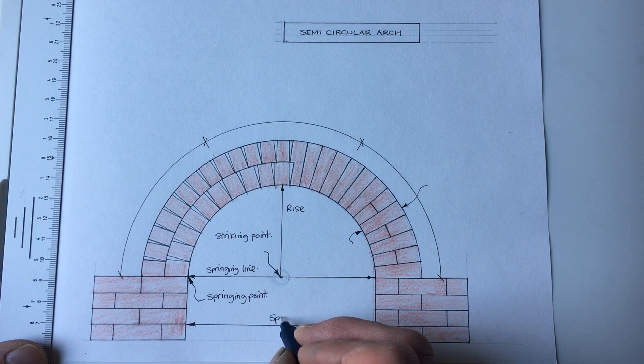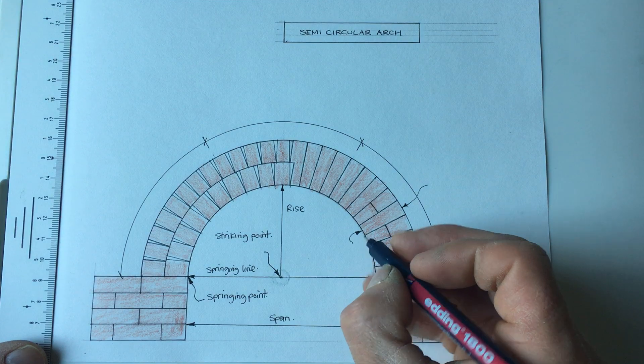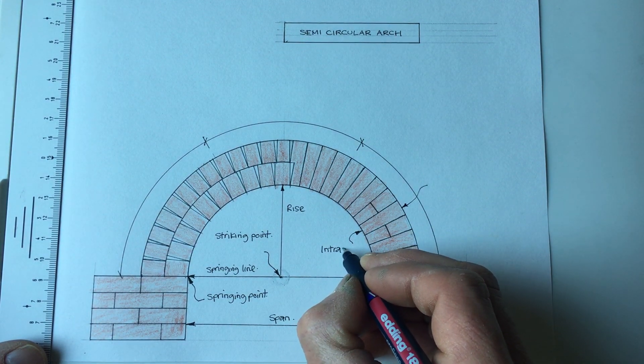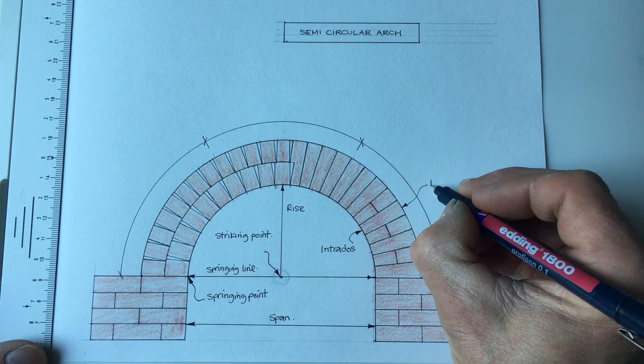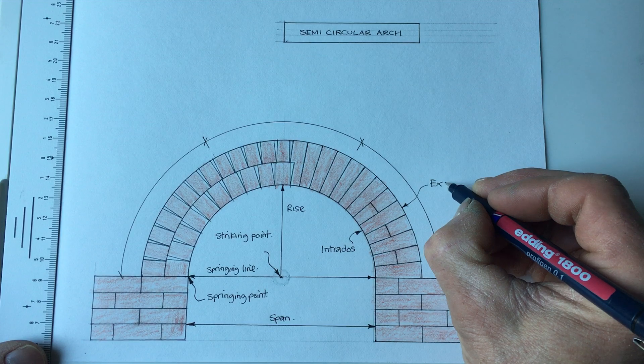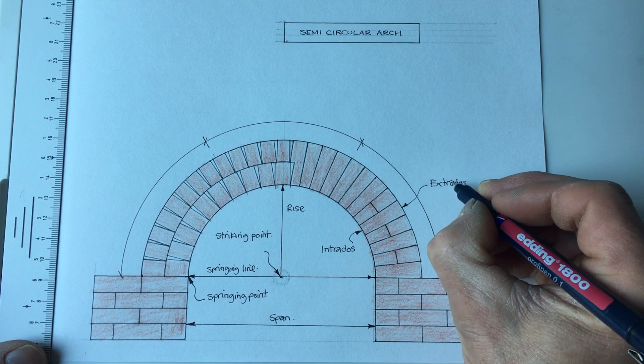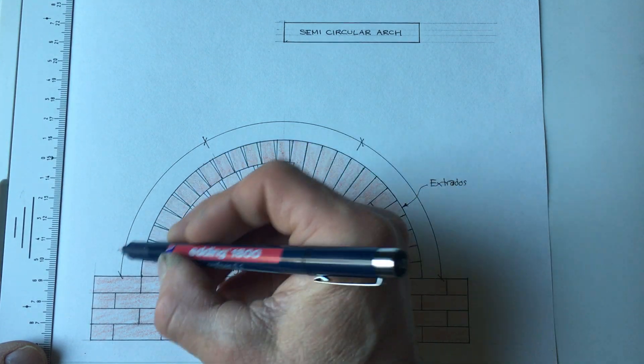So we have the span there. Here, the underside of the arch, we have the intrados, and on the outside this edge here we have the extrados. As we said earlier on, this third of the arch is called the haunch.